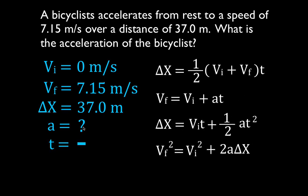Get out your kinematic equations. In each kinematic equation there are four variables. If you're given three, then you can solve for the fourth. We need to find the equation that has the acceleration in it and also has these other three variables. The first equation doesn't have the acceleration in it, so we cannot use that equation. The second equation has the acceleration in it. Do we know the other three variables? We know the final velocity — yes. The initial velocity — yes. The time — no, we do not know the time. Therefore, we cannot use that equation.